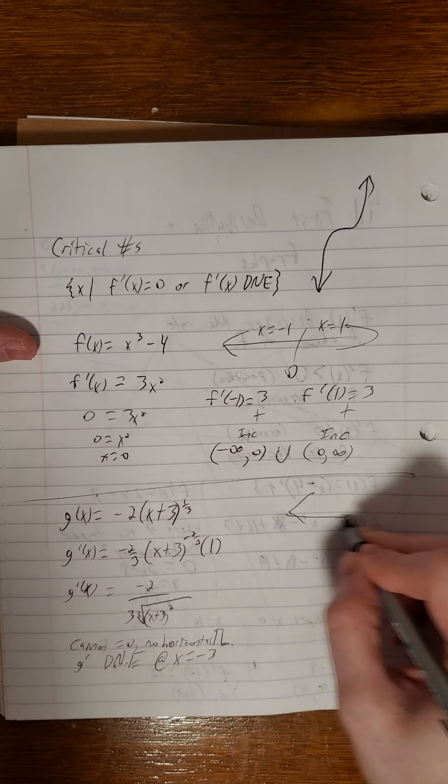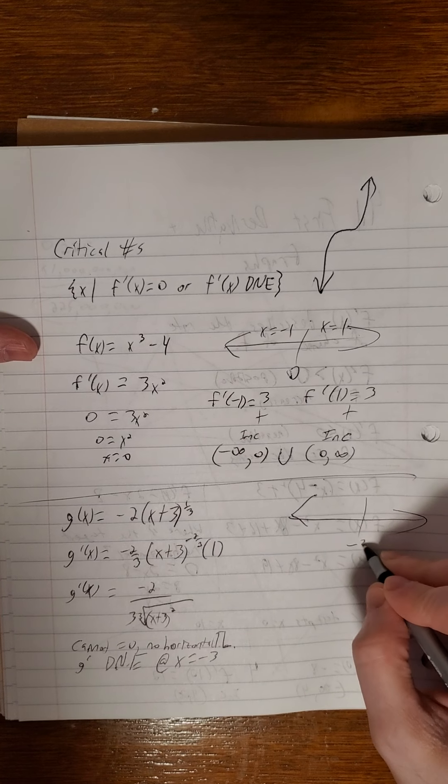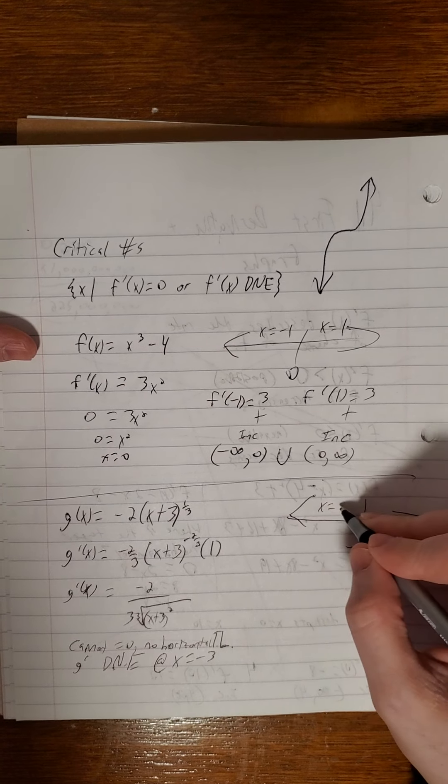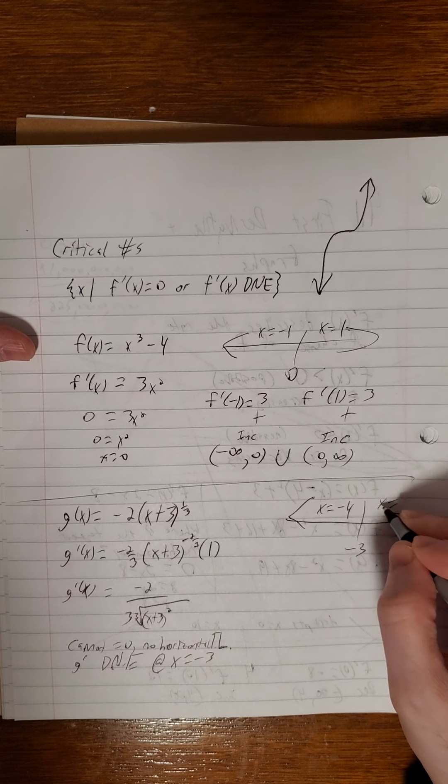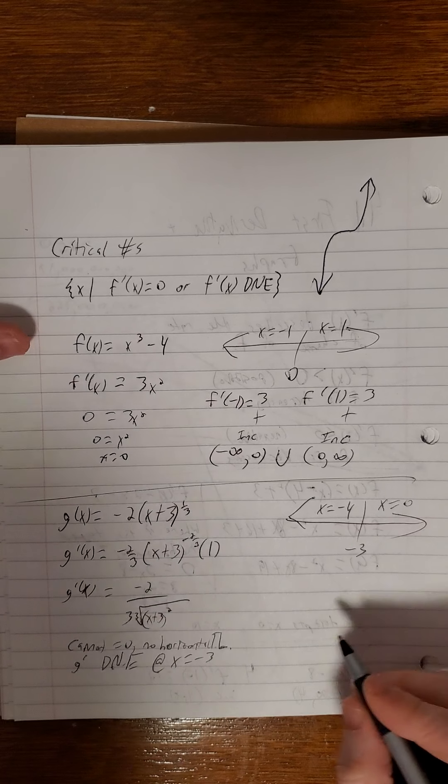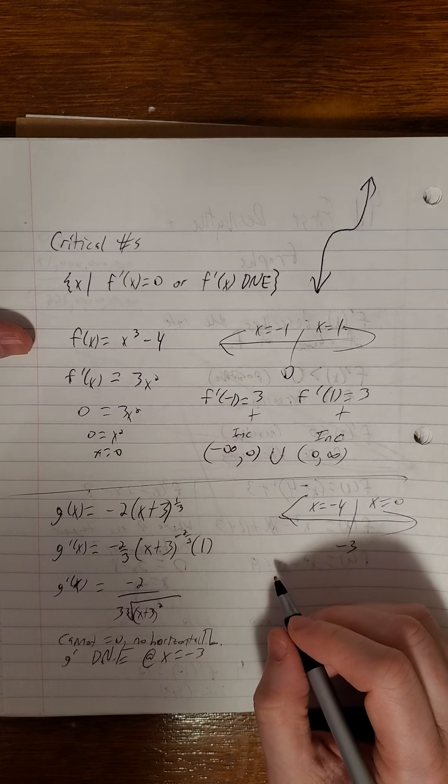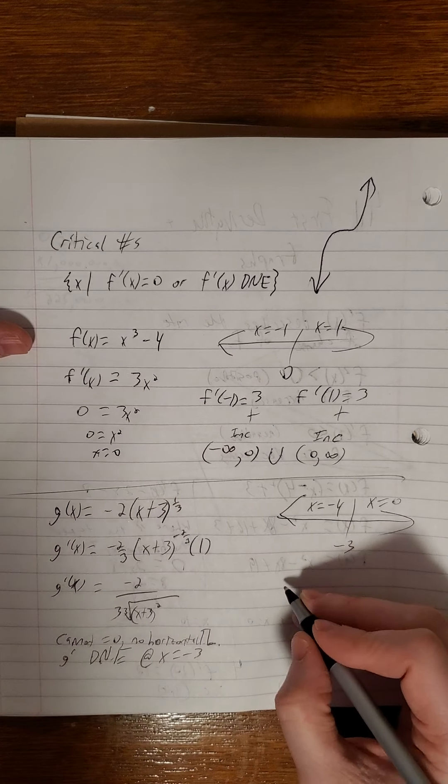So g prime does not exist at x equals negative 3. So that's where we'll draw our line in the sand, so to speak. So we'll pick just something to the left of it, maybe negative 4, and to the right of it, I don't know, 0. And then we'll see where this graph is increasing, decreasing.